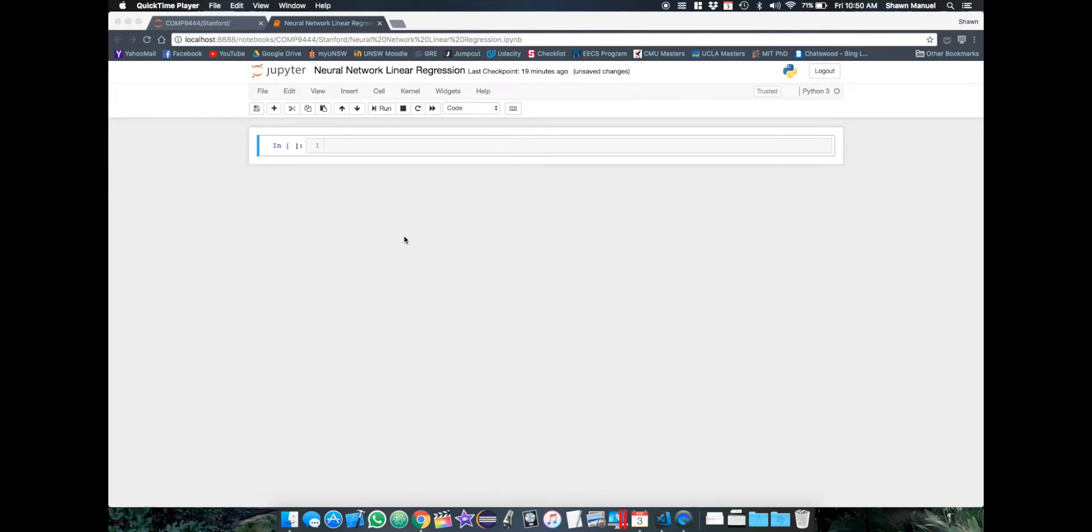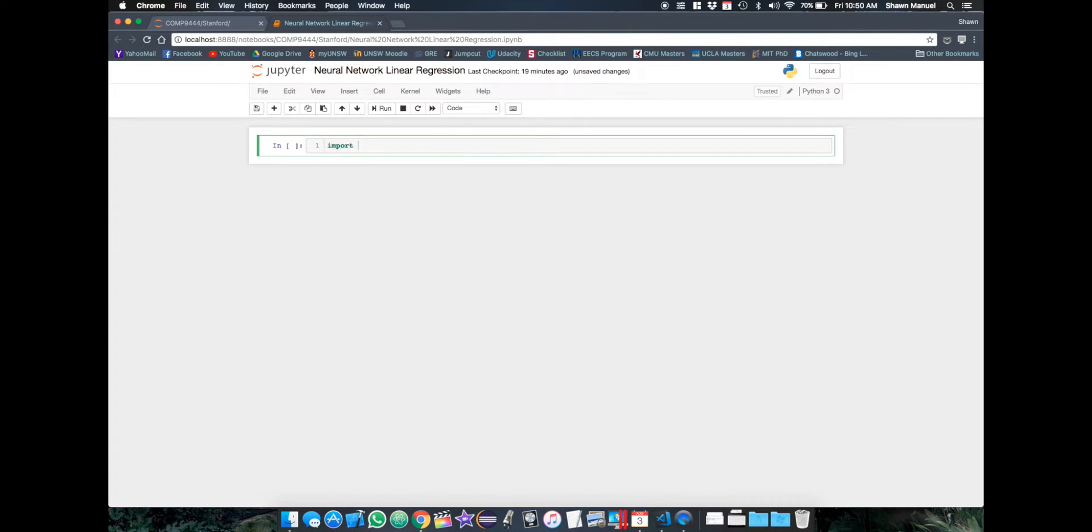So I'm in my Jupyter Notebook which is great for displaying graphs. If you don't have Jupyter Notebook installed, I'll put a link to the installation guide in the description below. So for this experiment, we'll need to import numpy for working with arrays of data. We'll need random for generating random initial weights for our model.